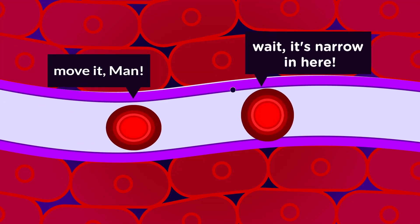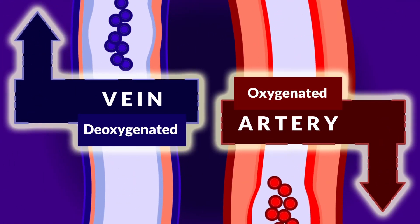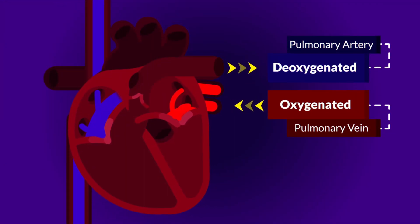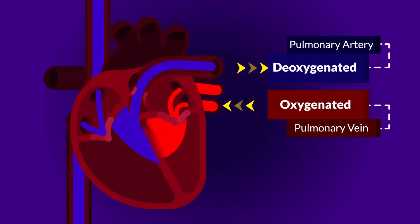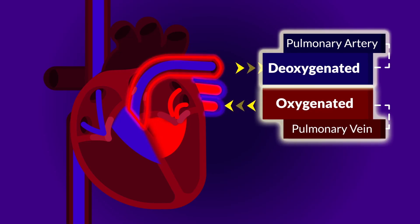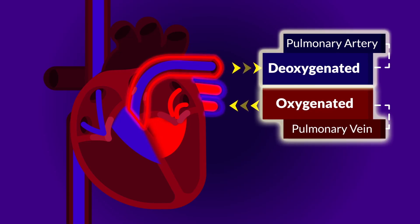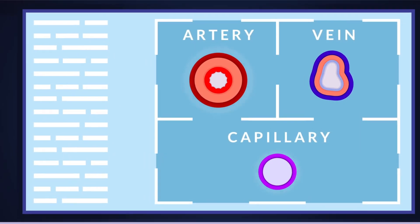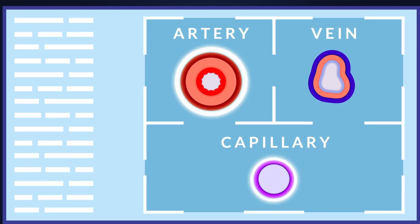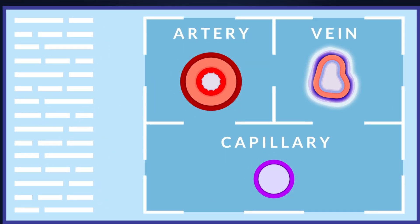The rule of which blood is carried by which vessel does not apply to the pulmonary artery and pulmonary vein — in both, the roles get exchanged. While observing a cross-section of the three blood vessels, arteries and capillaries appear circular, while veins are ovular because of their composition.